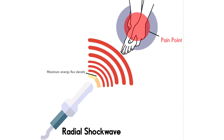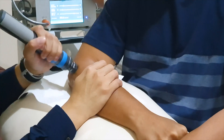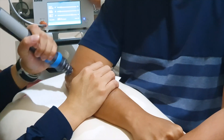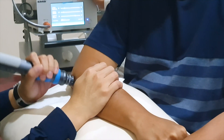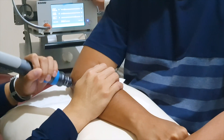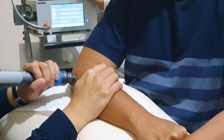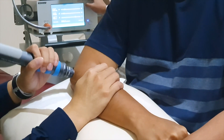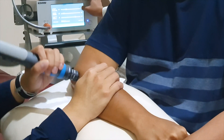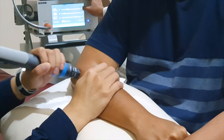In contrast, radial shockwave therapy's impact is more superficial, spreading out from the point of application. Radial shockwaves are not generated in water. They are generated using compressed air to accelerate a projectile into the applicator head, which itself creates a pressure wave that is then transmitted from the applicator head into the body.